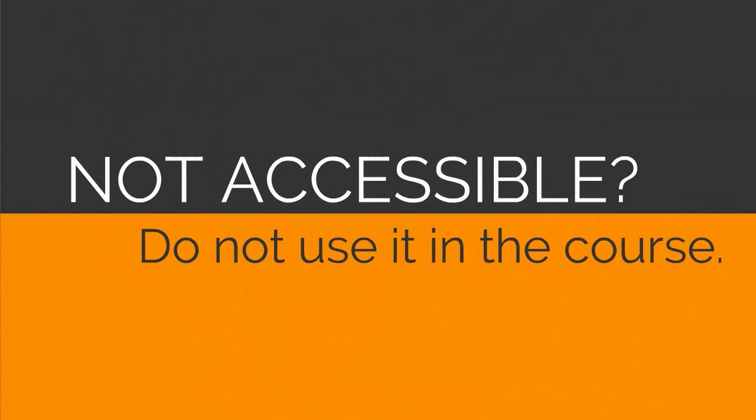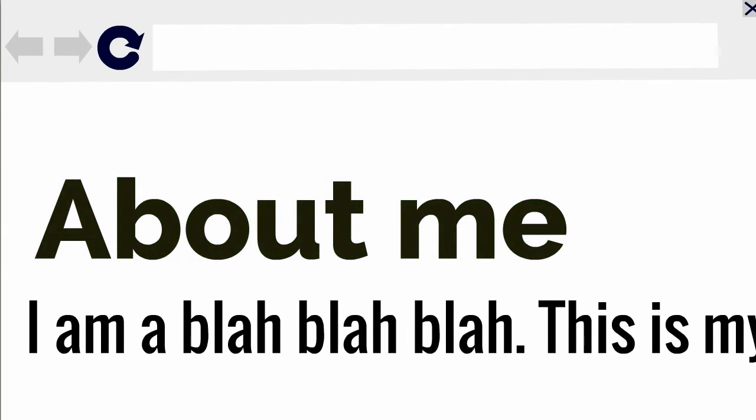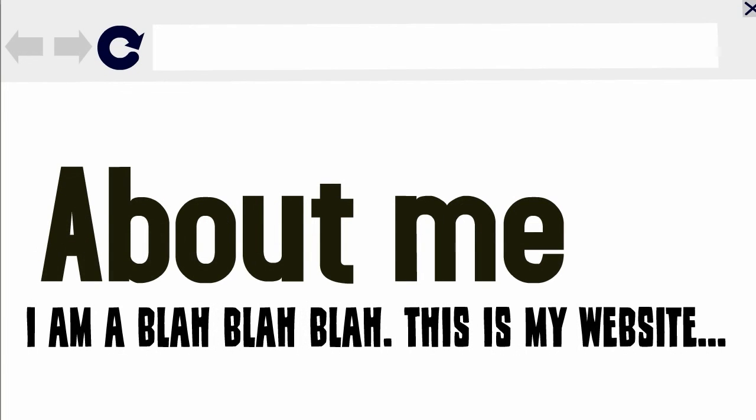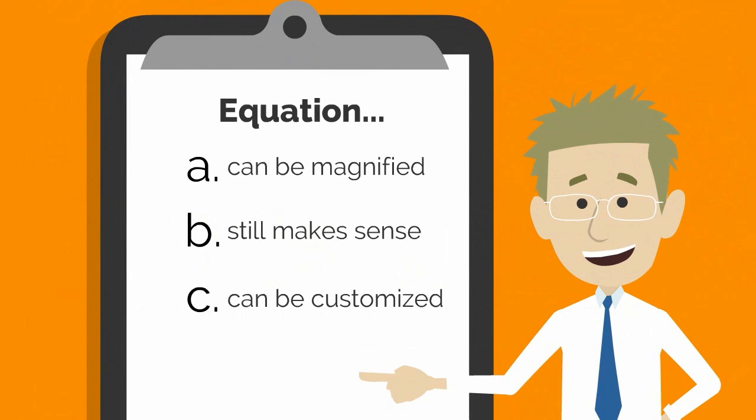Some people with low vision magnify the computer screen and change the color, font, and typeface of the text to read the content of a page. As a result, an accessible equation is one that can be magnified, still makes sense when magnified, and can be customized.